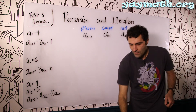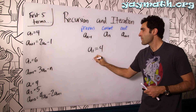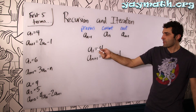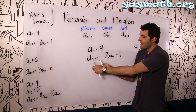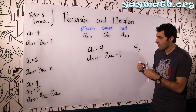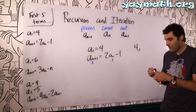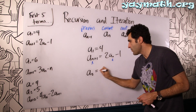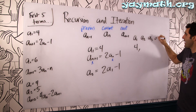Let's find the first five terms of this sequence: a1 = 4, and a_(n+1) = 2·a_n − 1. The first term is already given as 4. Now, if we set n = 1, the formula gives us a2 = 2·a1 − 1 = 2·4 − 1 = 8 − 1 = 7.